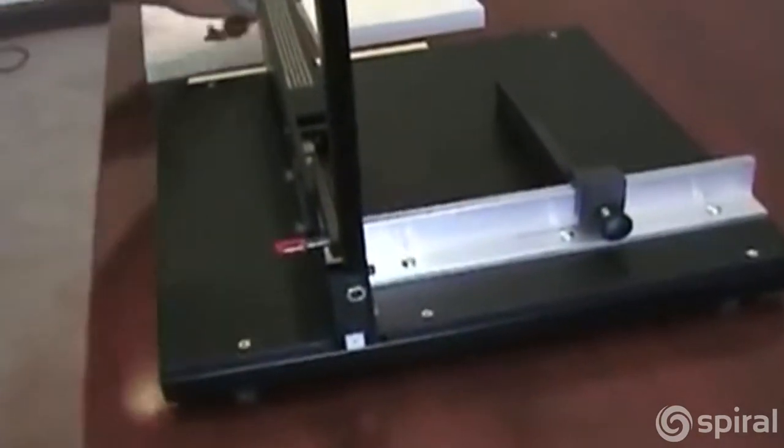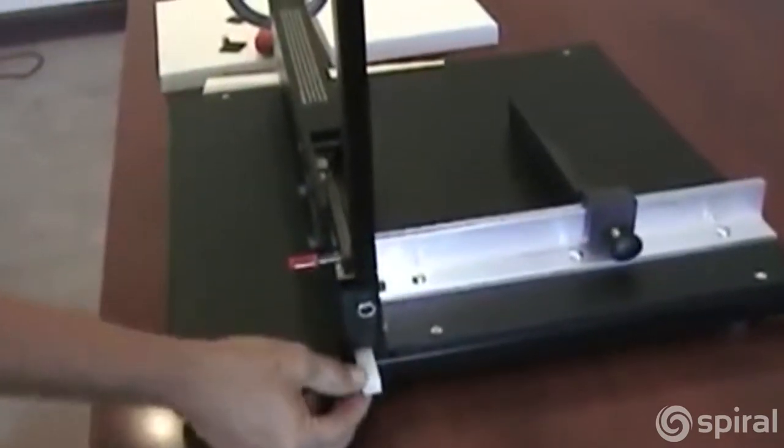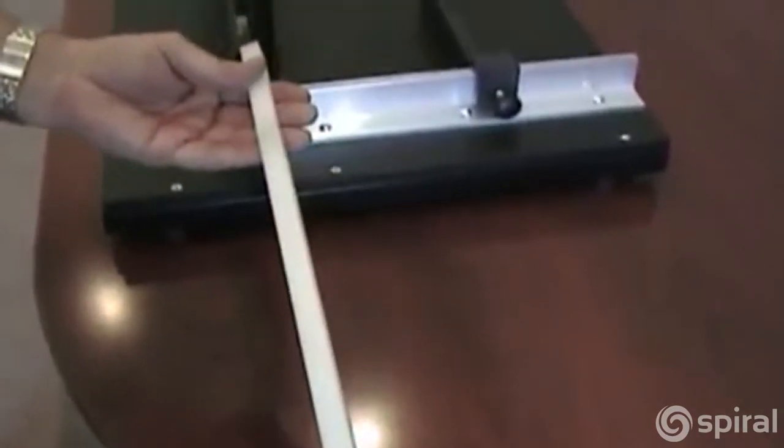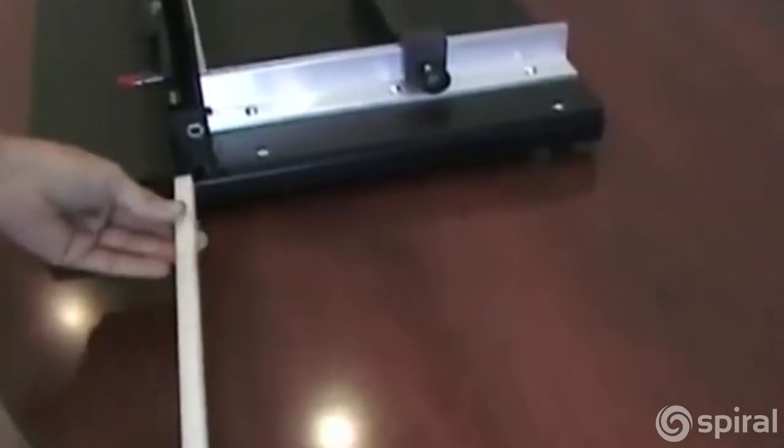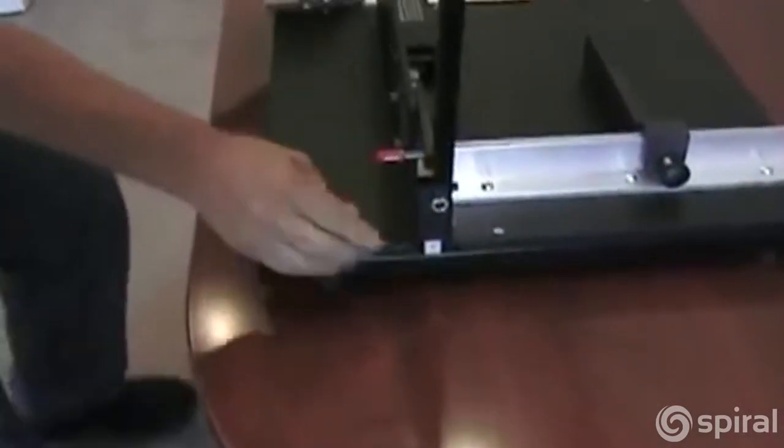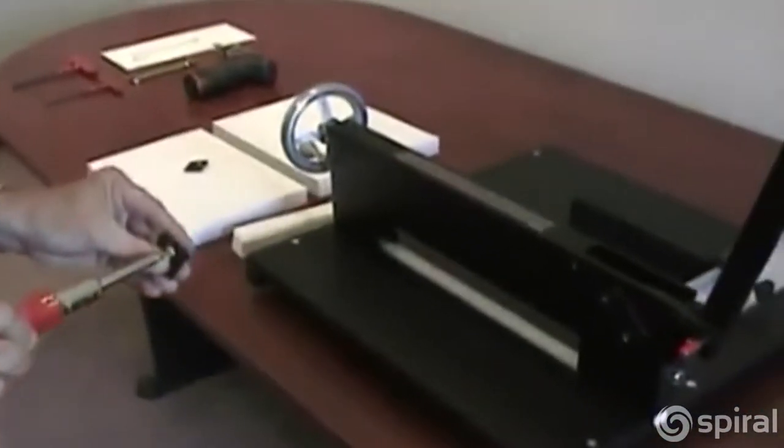And you can just push that cutting stick in from the left side of the machine, push it out rather, and pull it out. Hard to see the grooves on the camera here. We're just going to rotate it to a nice fresh side and slip it back in, and then replace the retainers. And that's how you rotate the cutting stick.